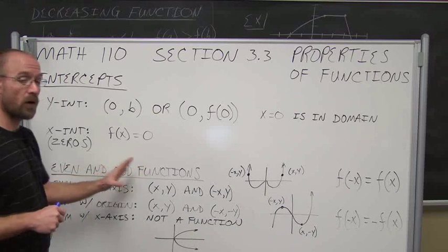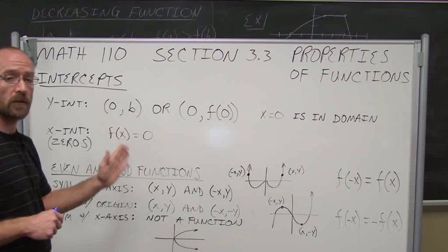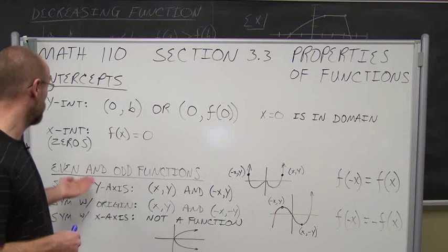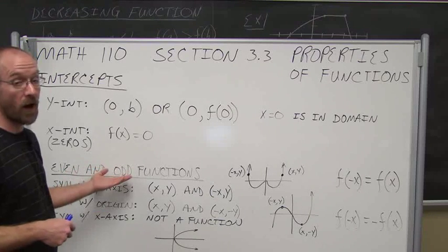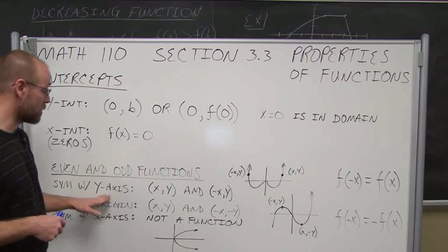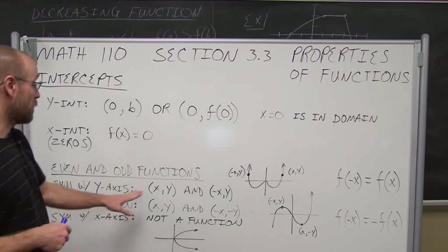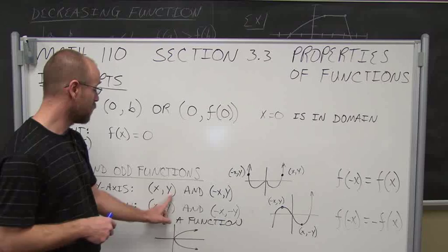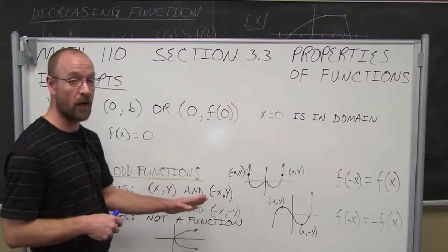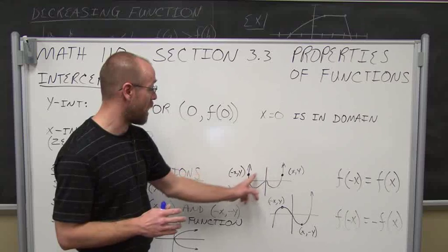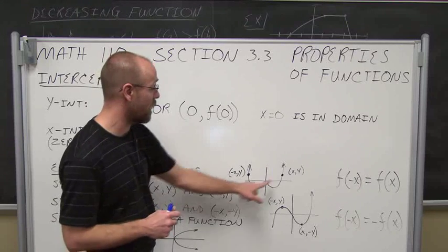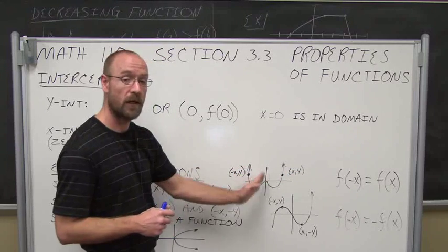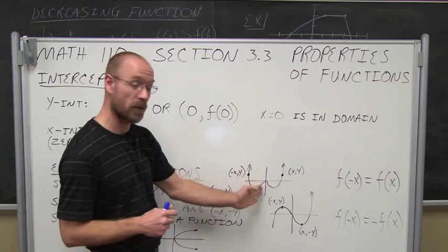The next thing we're going to do is recall something from chapter 2, section 2, when we talked about symmetry. We're going to use the tool of symmetry to determine if a function is even or odd. An even function has symmetry with the y-axis. If we change the value of x from positive to negative, we get the same value of y out — on either side of the y-axis, y is the same whether x is positive or negative. That tells us it's symmetric with the y-axis.